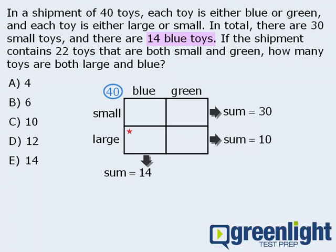Now, if 14 of the 40 toys are blue, then the remaining 26 toys must be green. This means that the sum of these two boxes must be 26, since there are 26 green toys altogether. Now, at this point, we know the sums of the rows and columns, but we have not yet been able to add any information about the actual number of toys to be placed in each individual box.